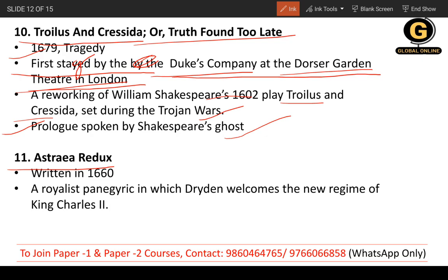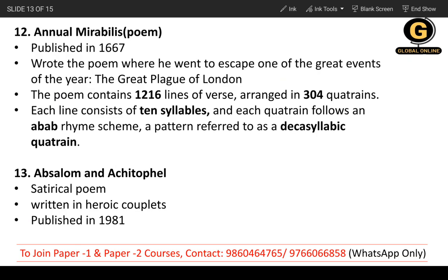Next is 'Astraea Redux,' written in 1660. It is a royalist panegyric — a formal speech — in which Dryden welcomes the new regime of King Charles the Second. King Charles's return is the reason we refer to this era as the Restoration period, as things were restored with his arrival.